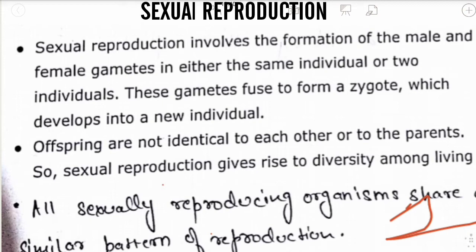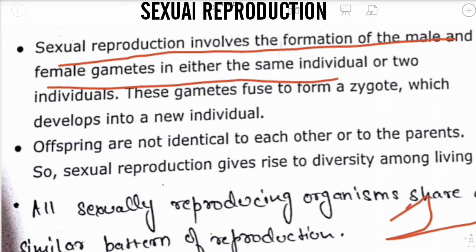Sexual reproduction is the reproduction in which two gametes are involved — that is, male and female gametes. Sexual reproduction involves the formation of male and female gametes, either in the same individual or in two different individuals, to produce new living organisms.